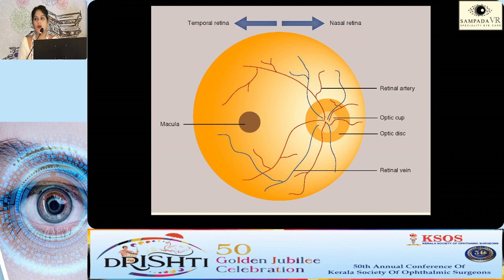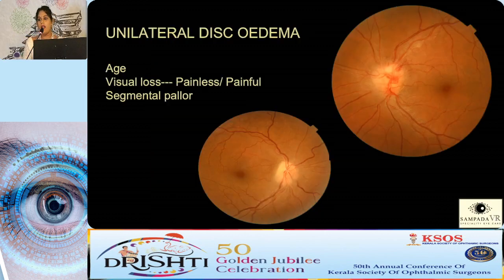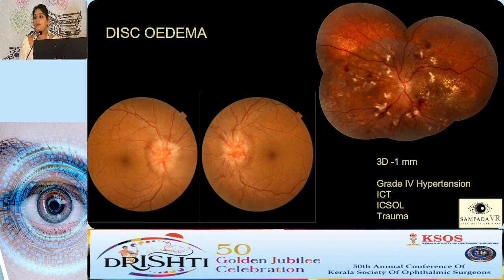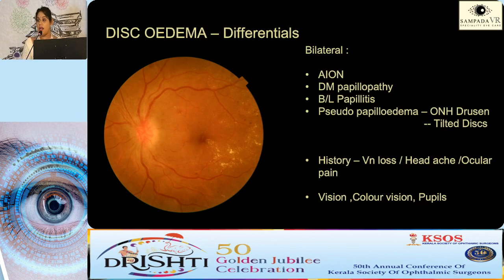I'll be covering only the common things you see. Starting with the disc: unilateral disc edema is most common. You can differentiate whether it is AAON — which shows segmental pallor — or papillitis, depending on the age. Bilateral disc edema with multiple cotton wool spots favors malignant hypertension. Without those, consider raised ICP, a space-occupying lesion, or trauma. Bilateral disc edema differentials include bilateral AAON and diabetic papillopathy, seen with telangiectatic vessels on the disc.